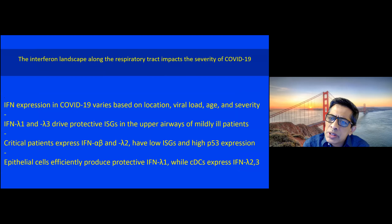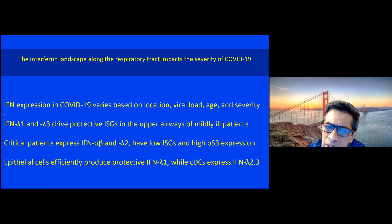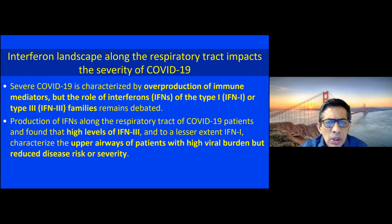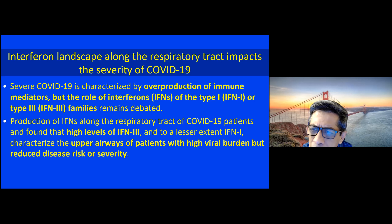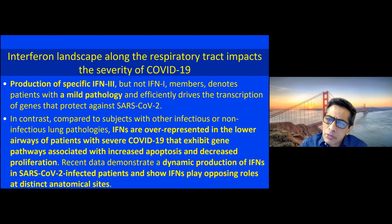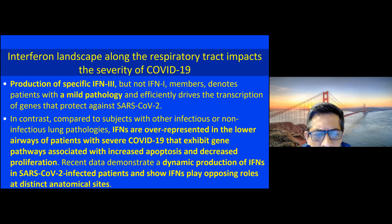When the respiratory system is impacted, the interferon response and interferon landscape are important. Interferon expression in COVID-19 depends on location, viral load, age, and severity. There is a protective effect on the airways through interferon pathways — epithelial cells produce protective interferons while plasmacytoid dendritic cells express negative interferons. In severe COVID, there is overproduction of immune mediators. High interferon lambda (type 3) may be protective; production of specific interferon type 3 but not type 1 denotes milder pathology and may allow better viral clearance.